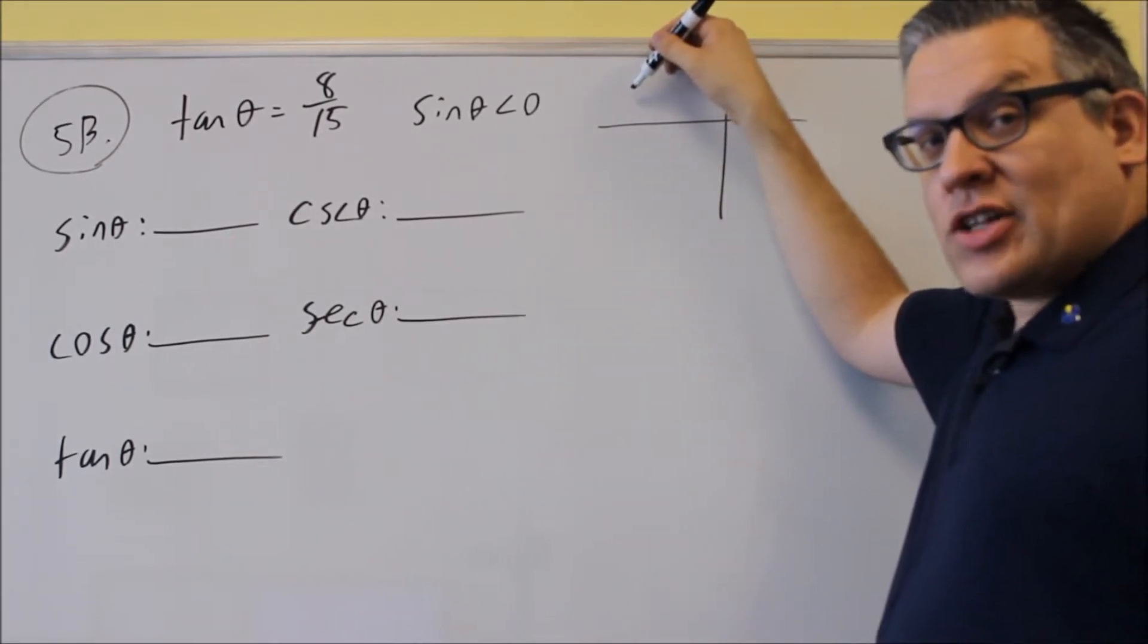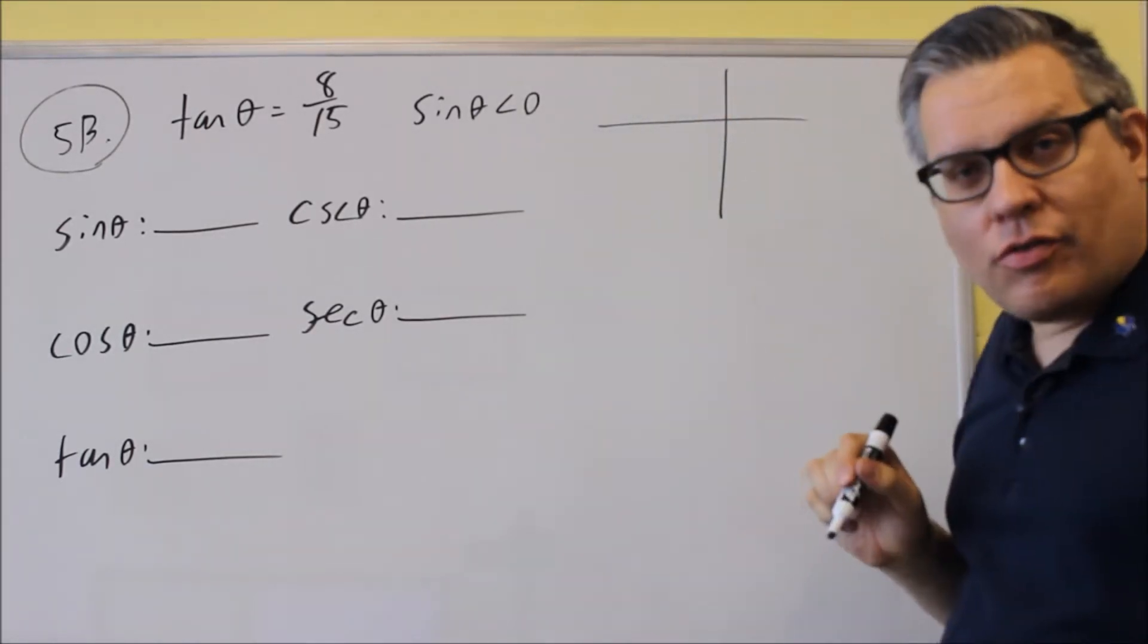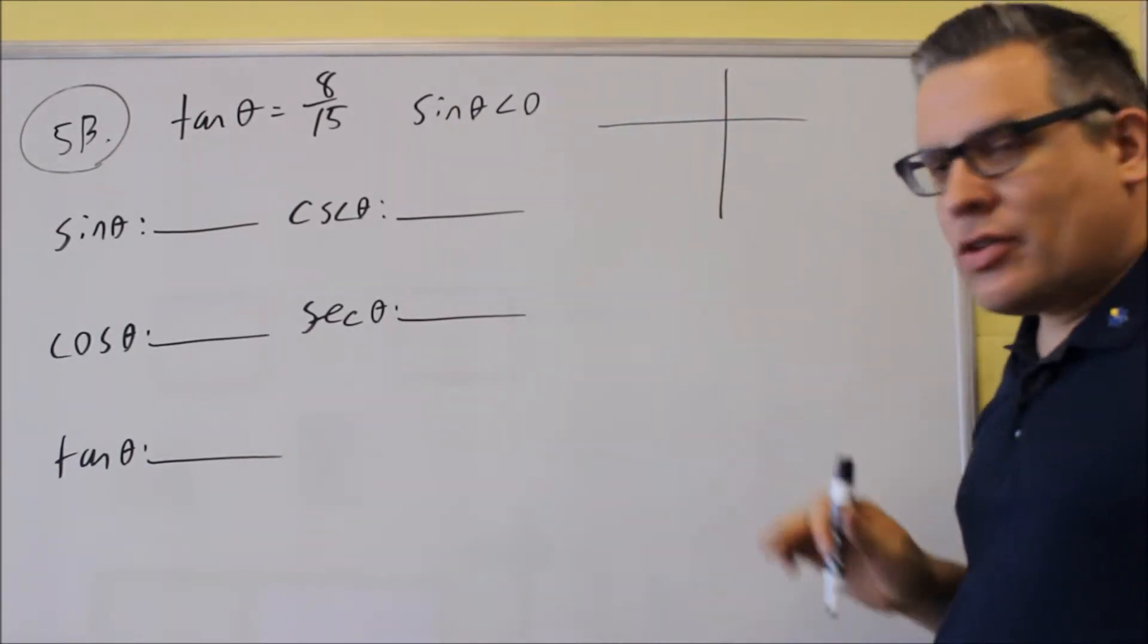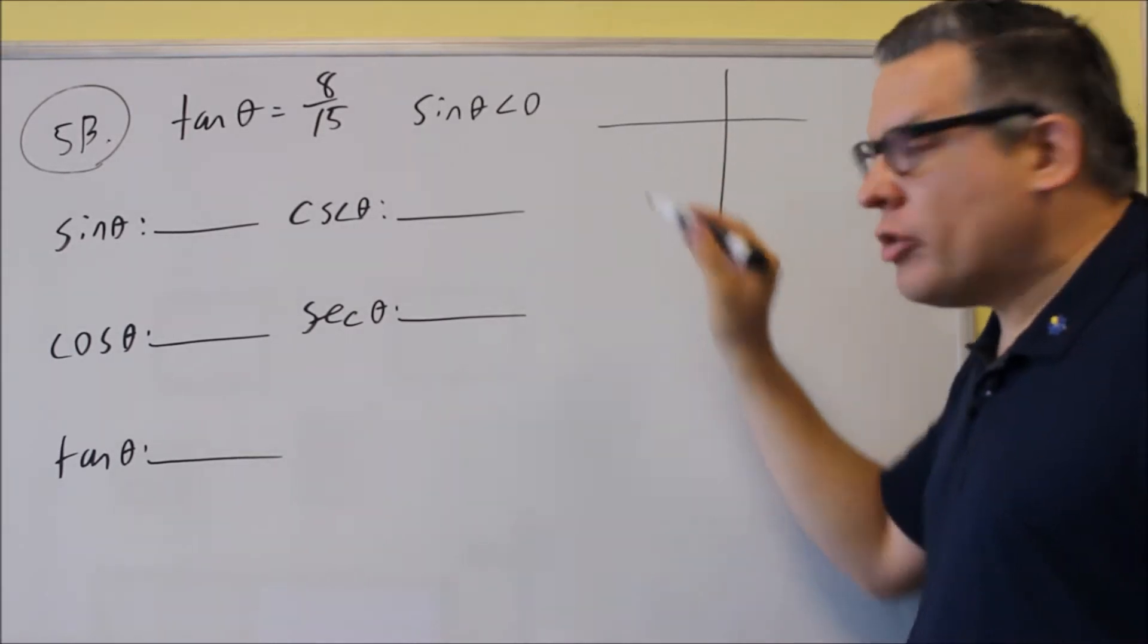Students means sine's positive, everything else would be negative. Take - T means tangent's positive, everything else is negative. That's the one that we want.